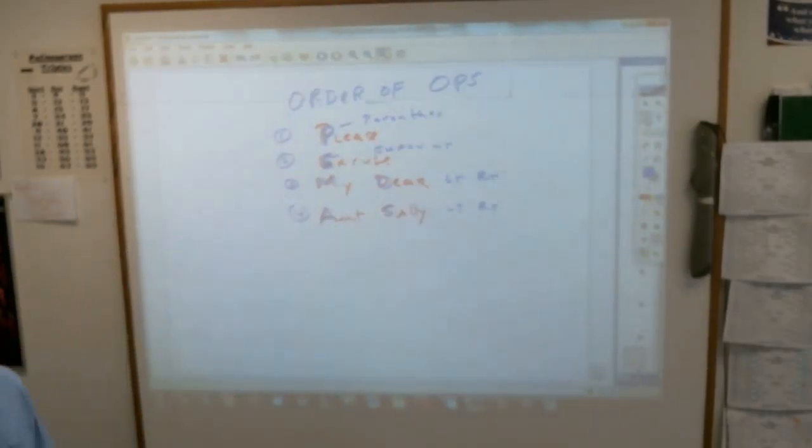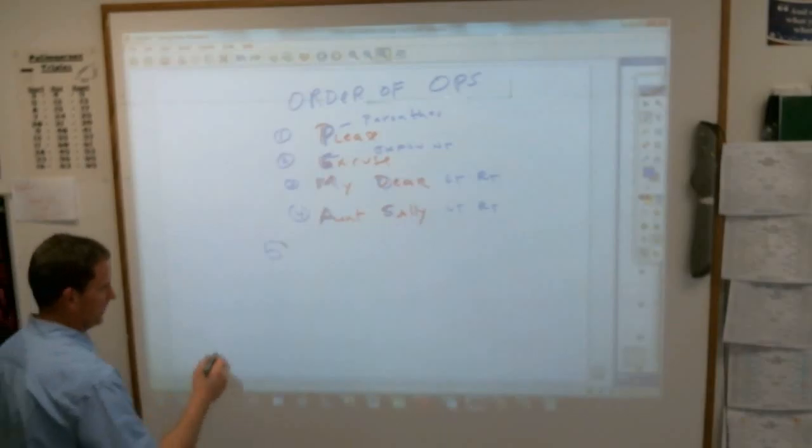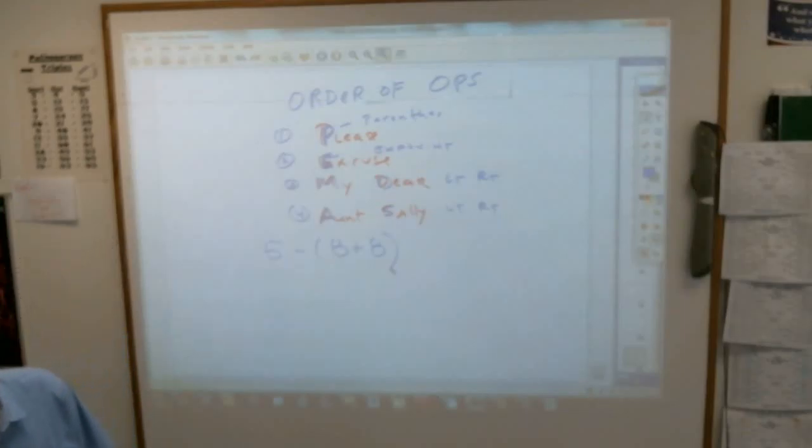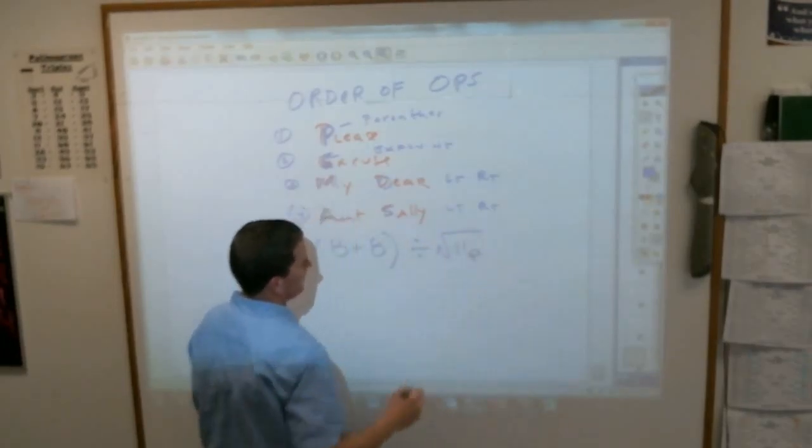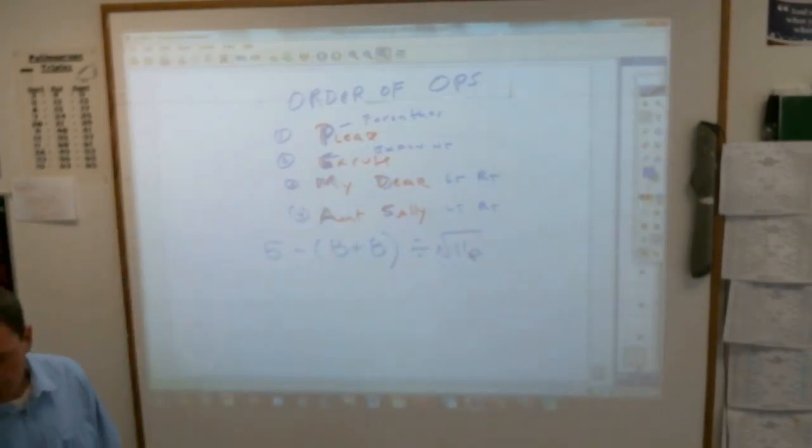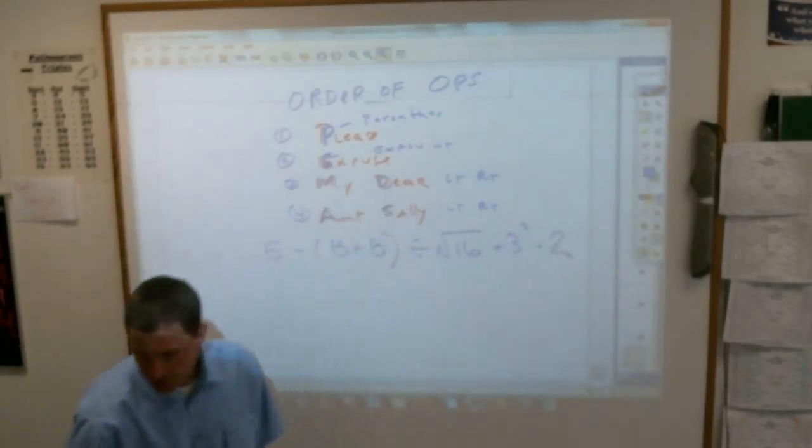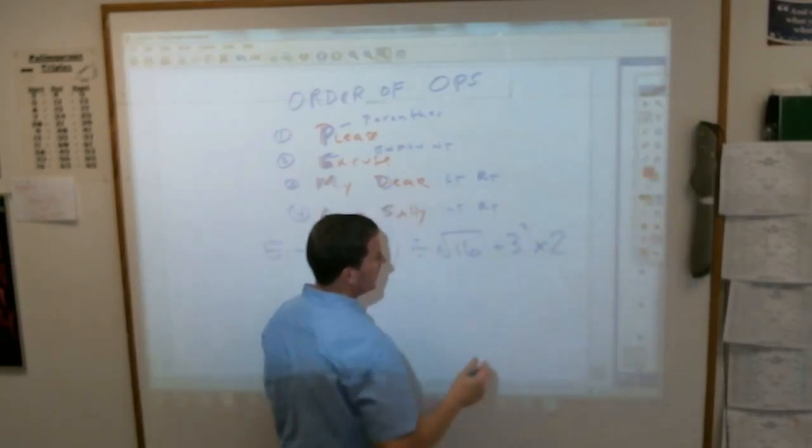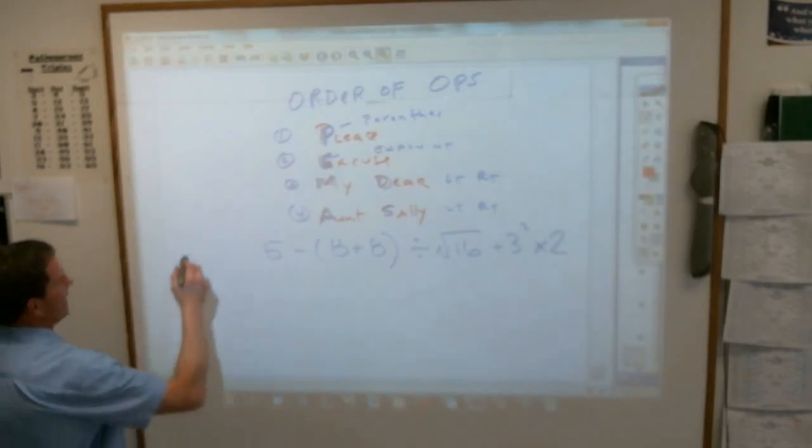Write this down. Five... And by the way, those of you that want to be fishers rather than sentence writers, pay folks' attention to this. 5 minus, 8 plus 8, divided by the square root of 16, plus 3 squared, times 2.